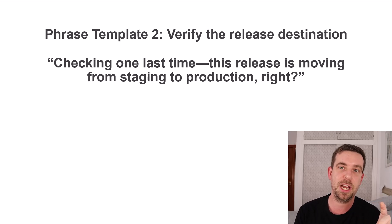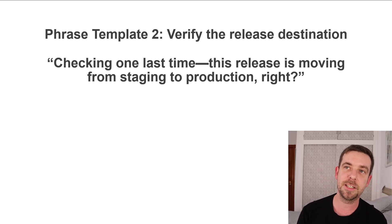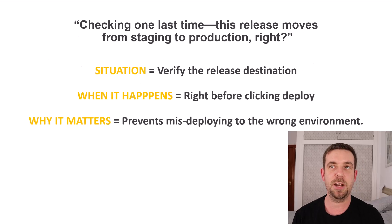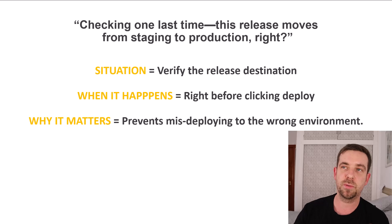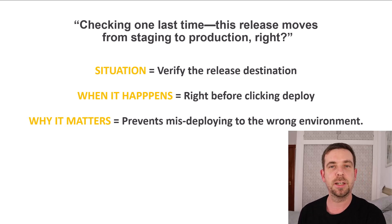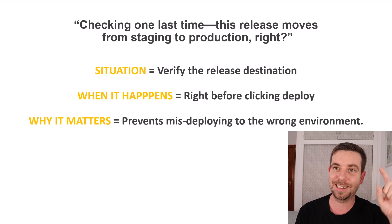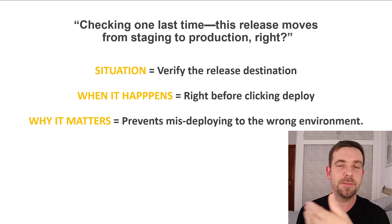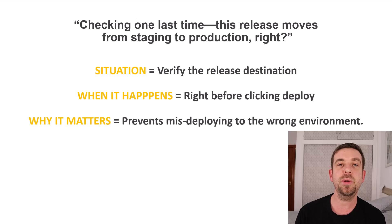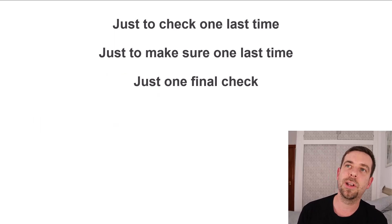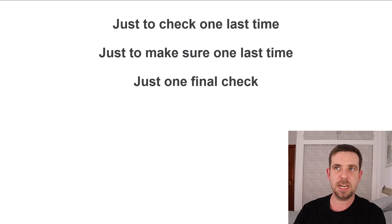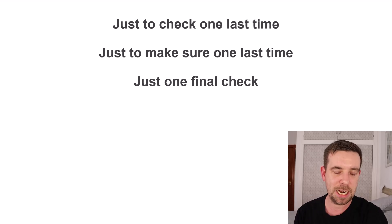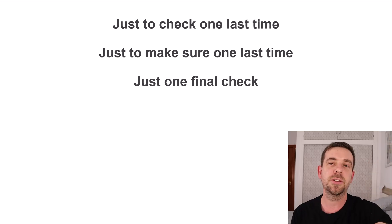Phrase template two — when you want to verify or check the release destination. The phrase is: checking one last time, this release is moving from staging to production, right? The situation is double-checking the release destination right before clicking deploy, and it prevents misdeploying to the wrong environment. You can say just to check one last time, just to make sure one last time, or just one final check — this is the final moment before you click deploy.